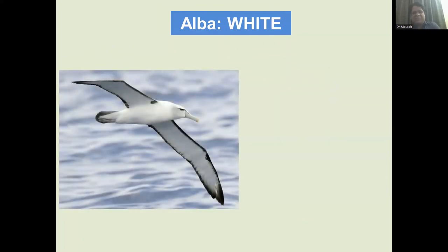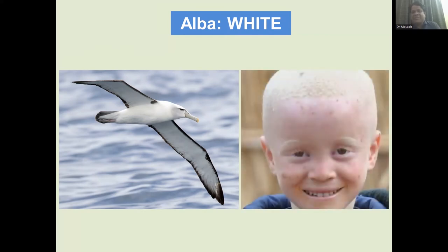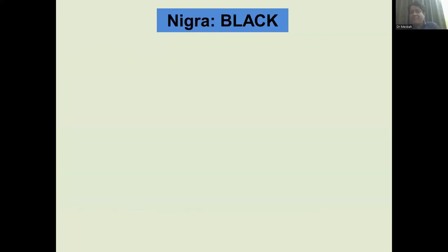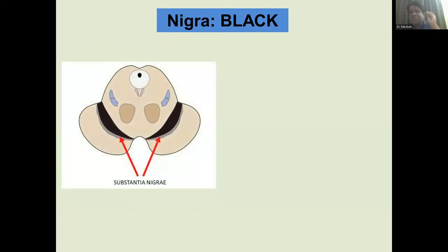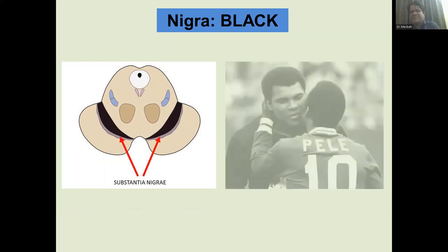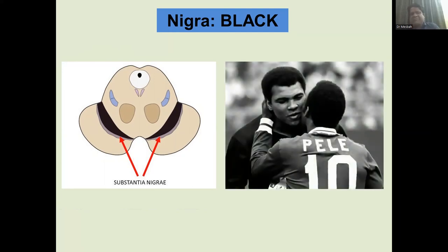The word 'alba' also connects to 'albatross,' the large white seabird, and 'albinism,' the depigmentation of skin. Moving to black — 'nigra': in the midbrain there is a substance called 'substantia nigra,' meaning the black substance. The Latin root 'negro' shares the same origin meaning black. Moving to red — 'rubra': there is a 'nucleus ruber' or red nucleus in the midbrain.